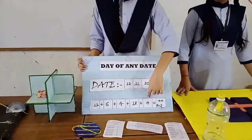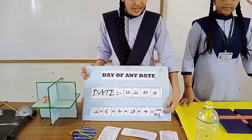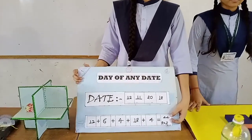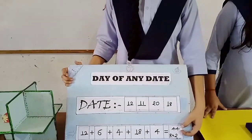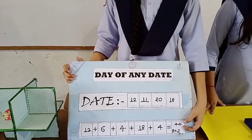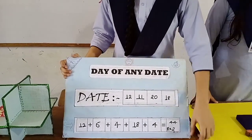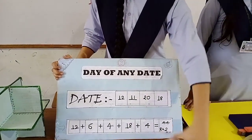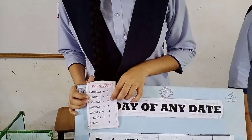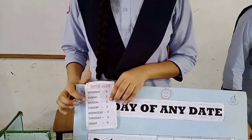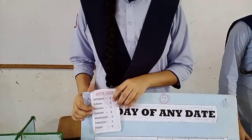Now we add all the values together: the total is 44. We divide 44 by 7 because a week has 7 days, and the remainder is 2. We have a date code for 2, which corresponds to Monday. So this date — 12-11-2018 — was a Monday.